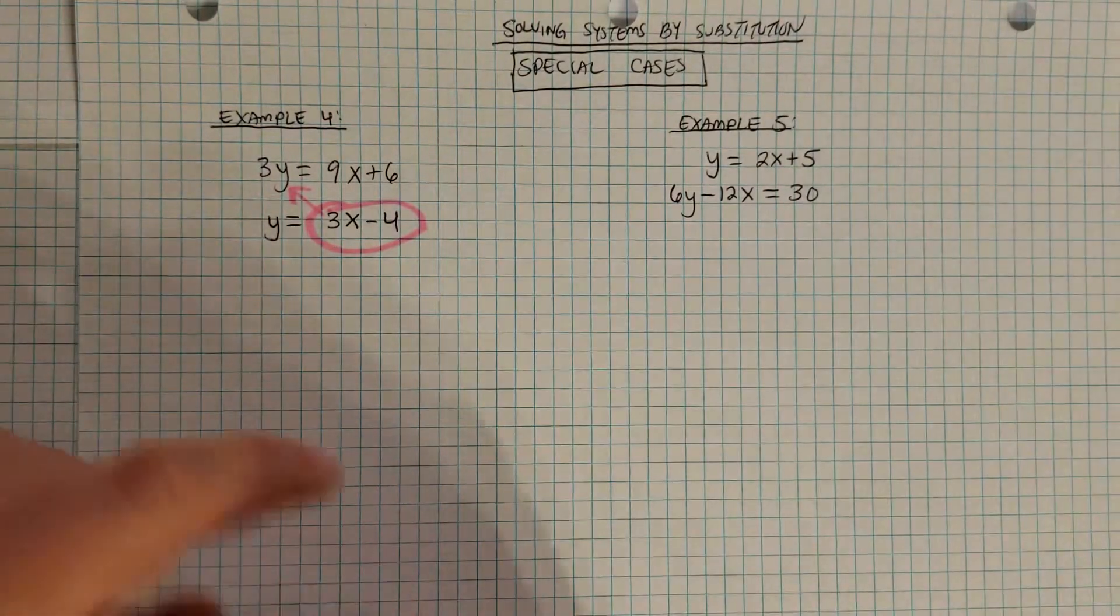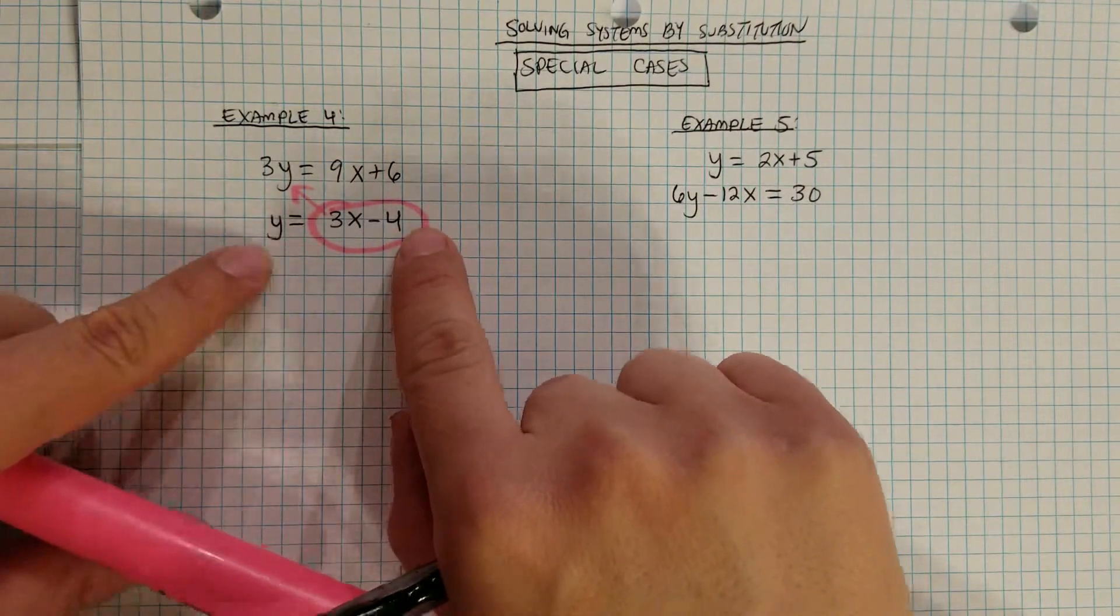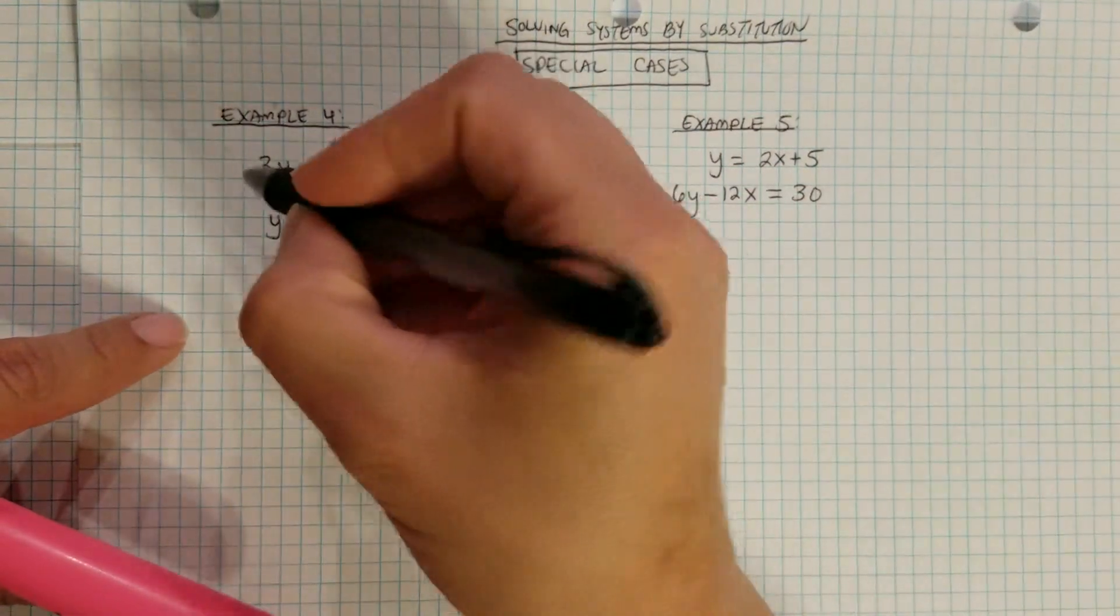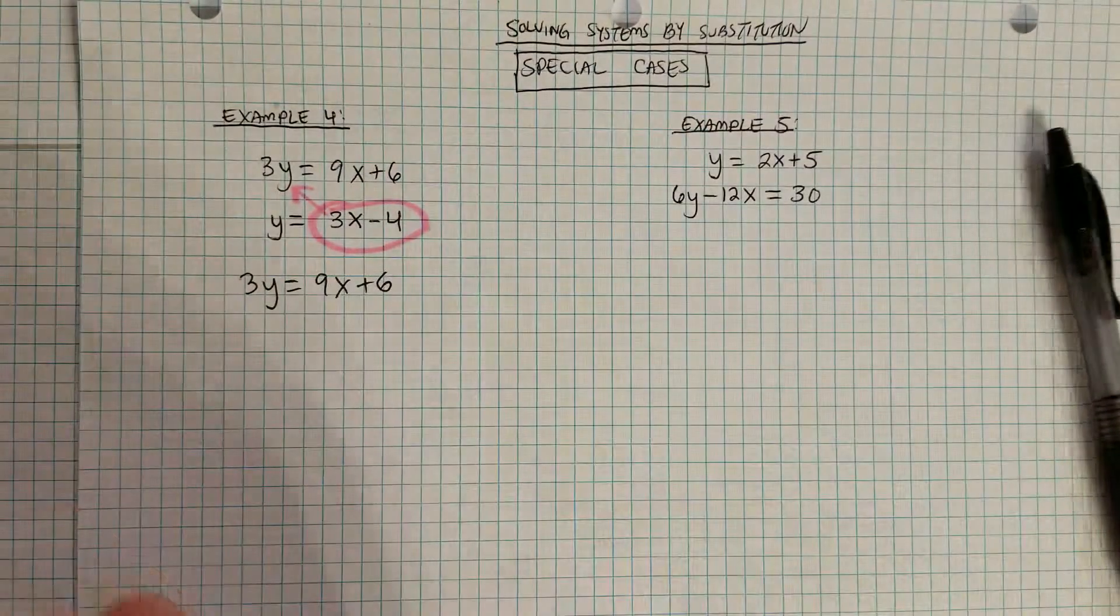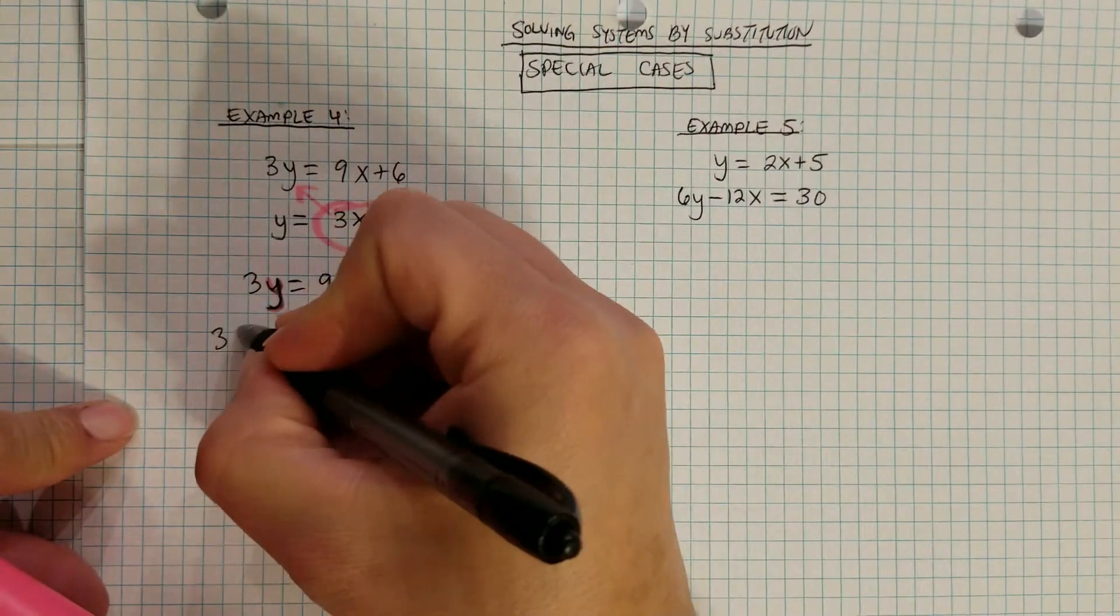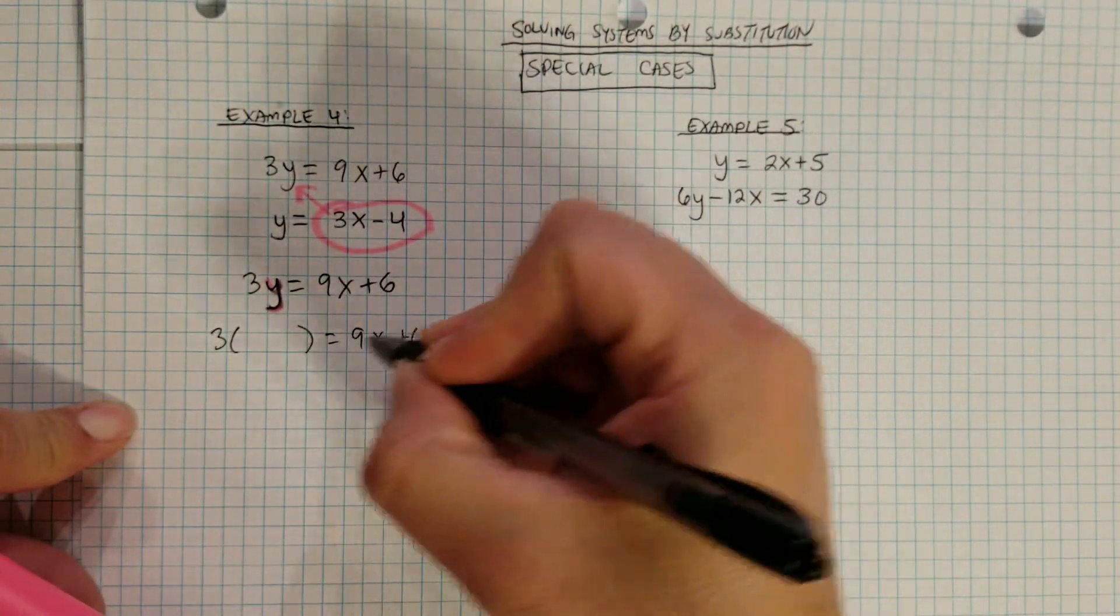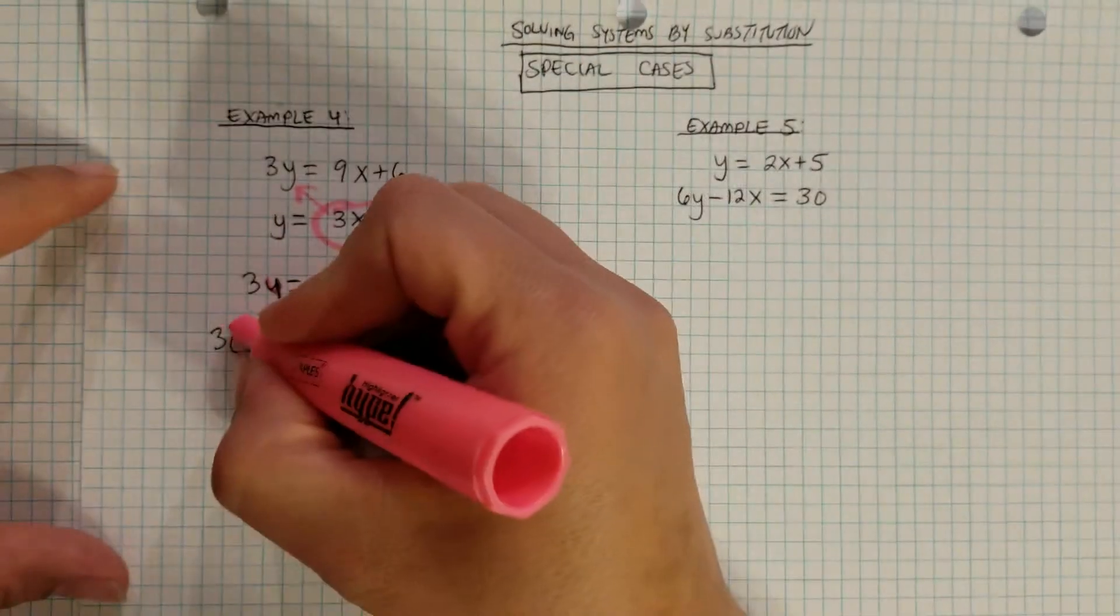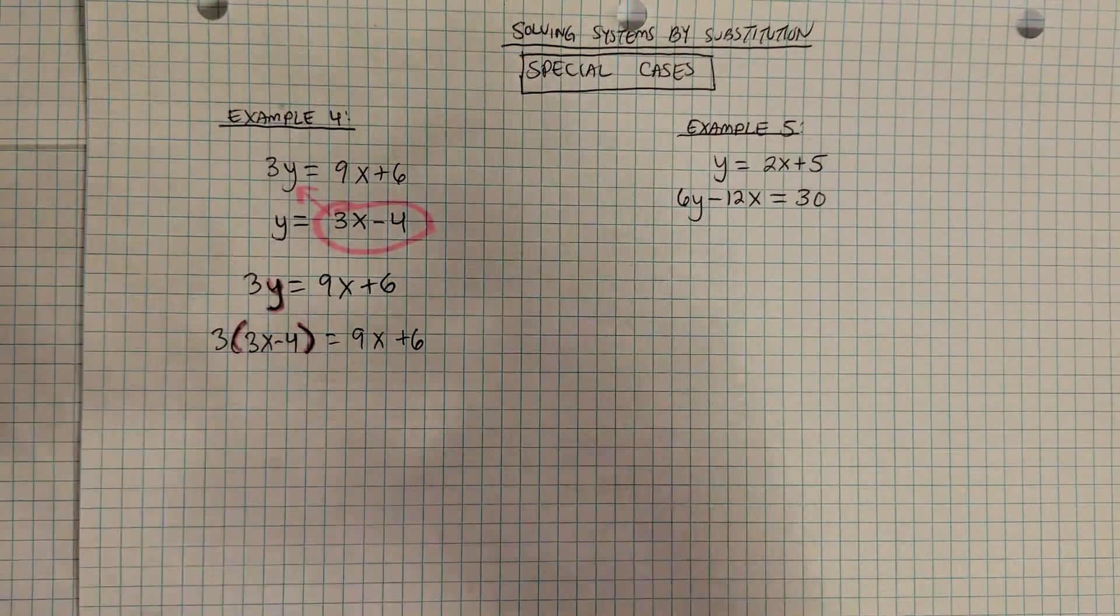For example, if we do that method of substitution here, we have y is equal to 3x minus 4, we're going to plug that expression for y into the other equation. So if we rewrite 3y is equal to 9x plus 6, but rather than the y, we're going to replace that y with the expression for y, which is 3x minus 4. So I'm going to substitute 3x minus 4 into this equation so I can figure out what is the value of x.